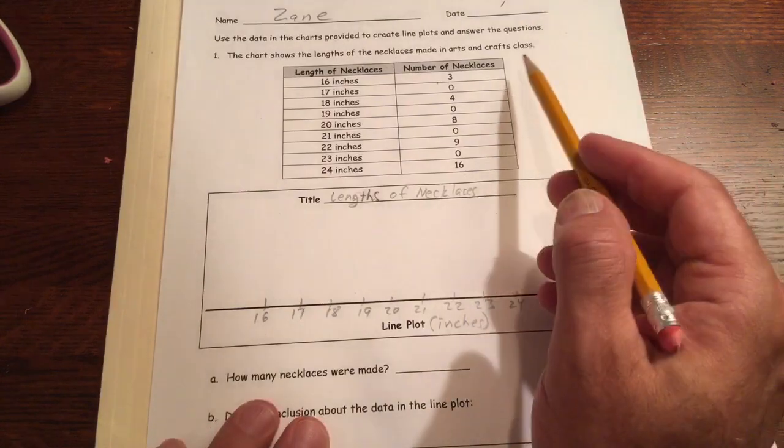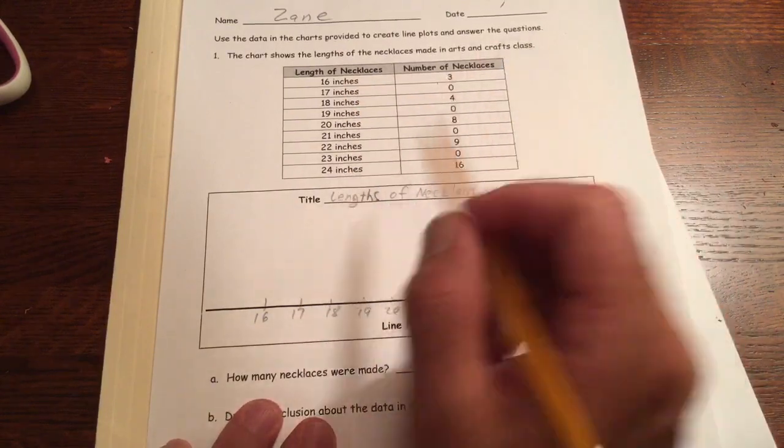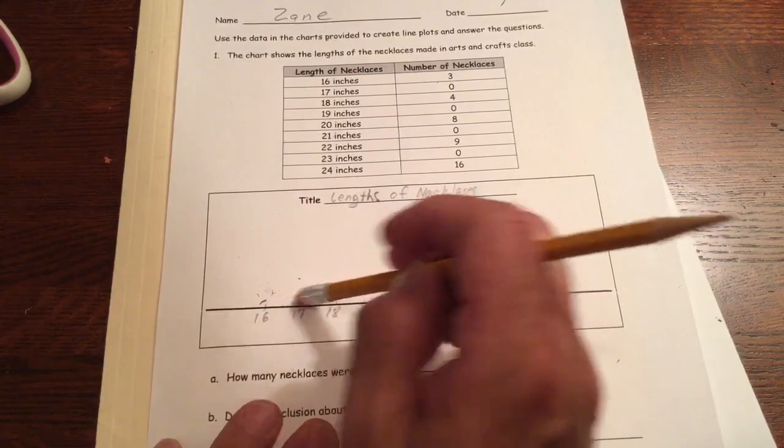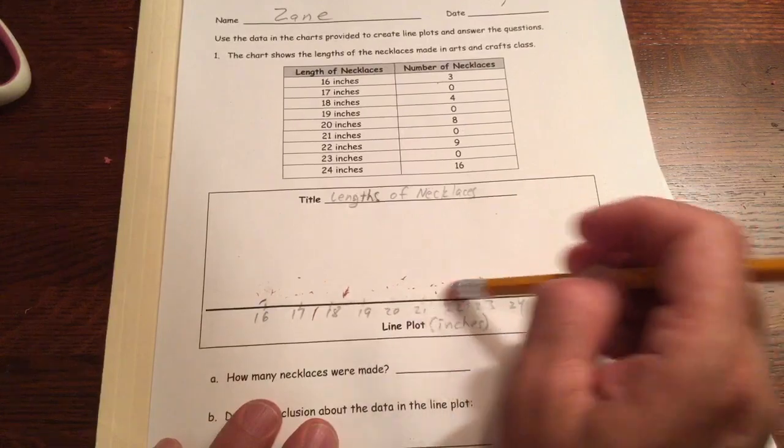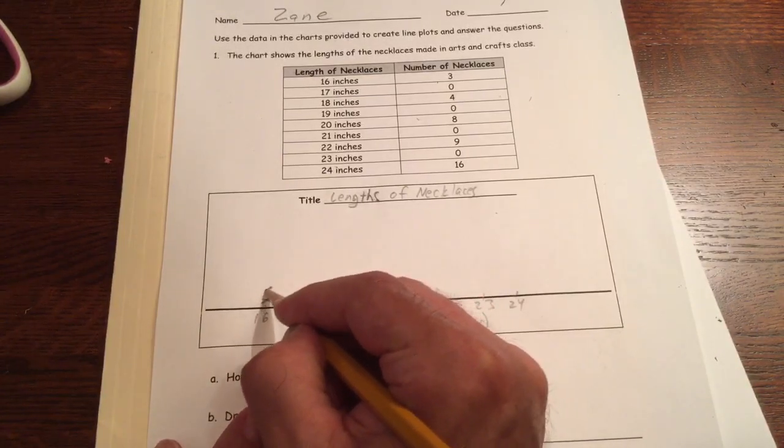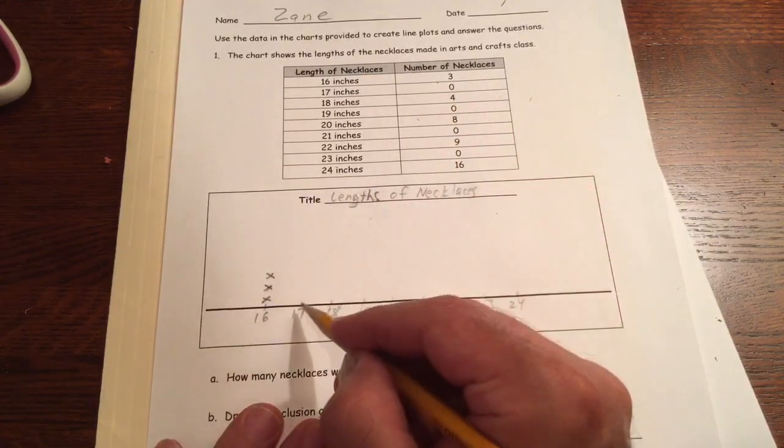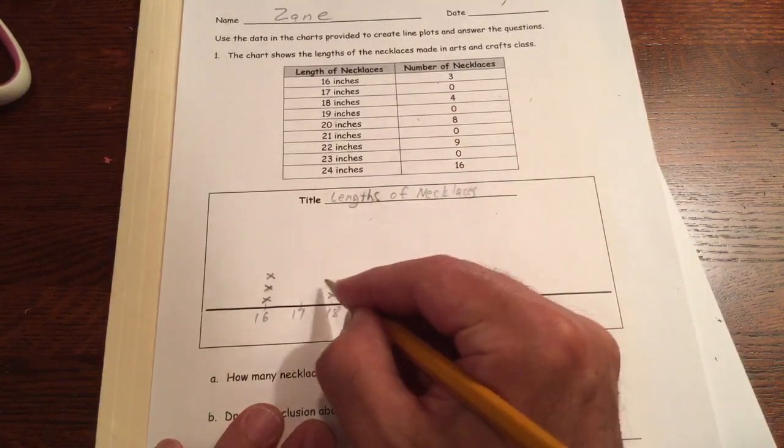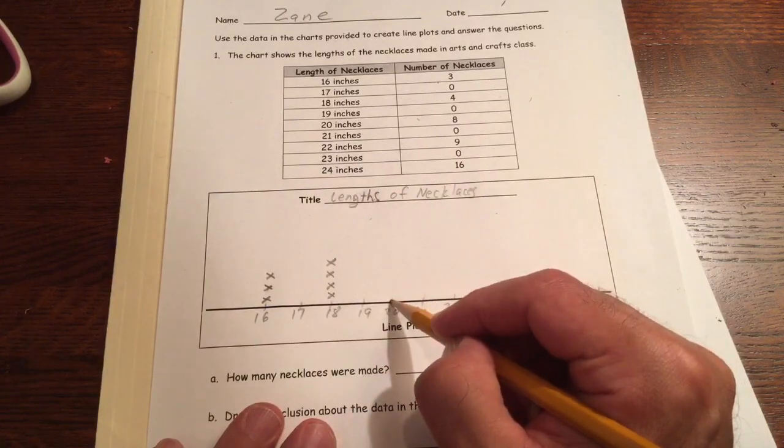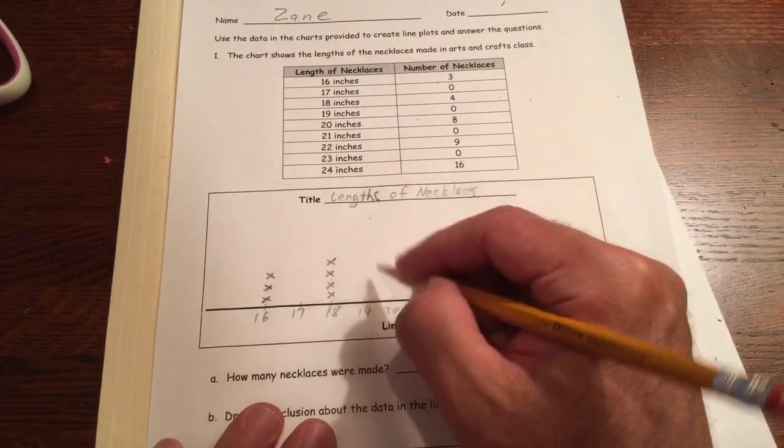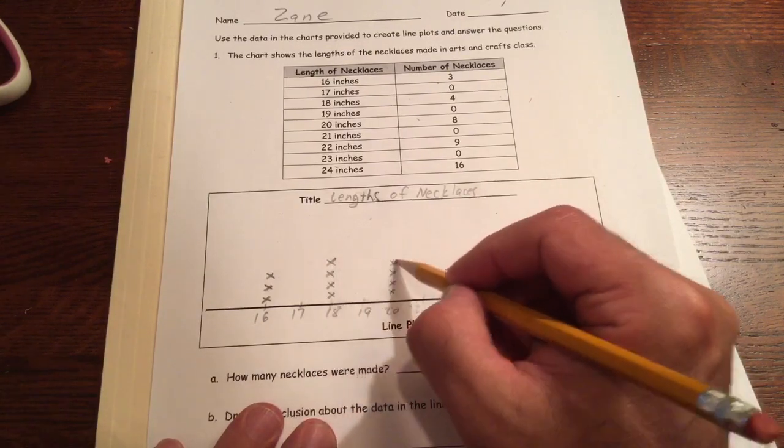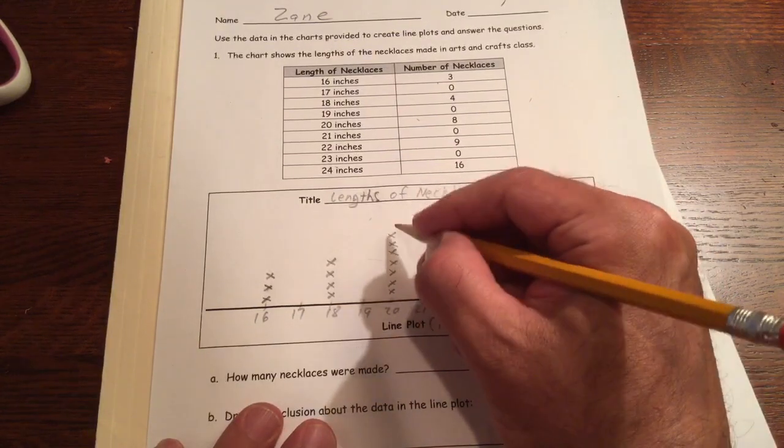So let's see, we're counting necklaces. 16 inch necklaces, there are three of those, so that's going to take 1, 2, 3. These hash marks, I should be careful that they don't take the places of x's. So they shouldn't stick up too far. 17 has 0, so I'm going to skip it. 18 has 4: 1, 2, 3, and it should be even with the other 3. 19, there aren't any of those. 20, there's 8 of those: 1, 2, 3, 4, 5, 6, 7, 8.